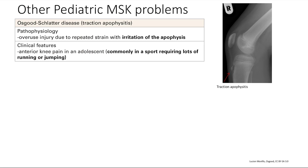The next problem we're going to look at is the knee. This is Osgood-Schlatter disease — traction apophysitis. It's an overuse injury due to repeated strain with irritation in the apophysis, which is the location on the bone where the tendon attaches. You can see the patellar tendon here attaching to the bone — it's been pulled off a little bit. That's traction apophysitis.